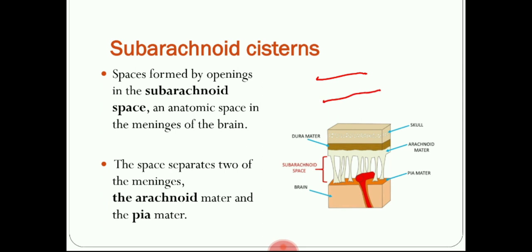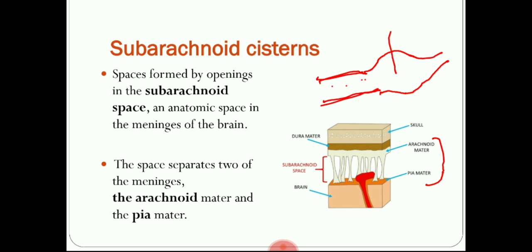There are two meningeal layers — that is the arachnoid mater and the pia mater — and in between there is the subarachnoid space. Usually the subarachnoid space is uniform in most places, but at certain locations they are anatomically dilated. This dilated subarachnoid space is known as a cistern. So, cisterns are subarachnoid spaces located in between the arachnoid and pia mater.